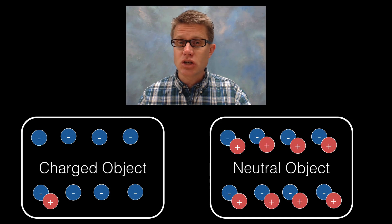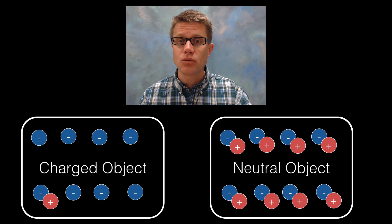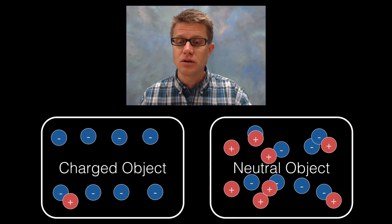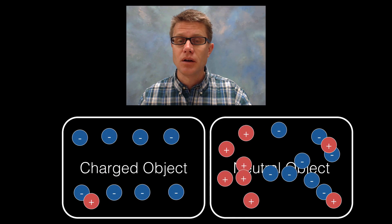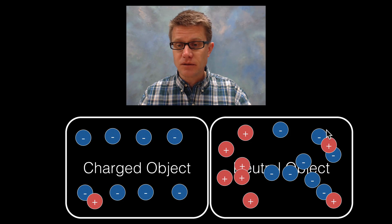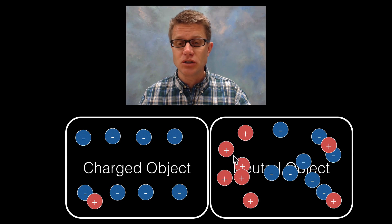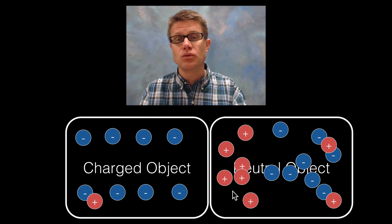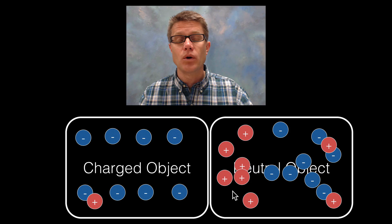Now let's say we take a charged object — that's the one on the left — and then we have a neutral object on the right. As I move the charged object towards the neutral object, what it is doing is polarizing those charges. It is moving the negative charges farther away because they are being repelled by the negative charges on the balloon. The positive charges are moving towards it, and so now there is an attraction between this polarized, what used to be neutral, object.